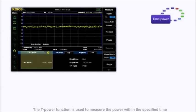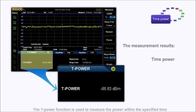The T power function is used to measure the power within the specified time when the spectrum analyzer is in zero span mode.